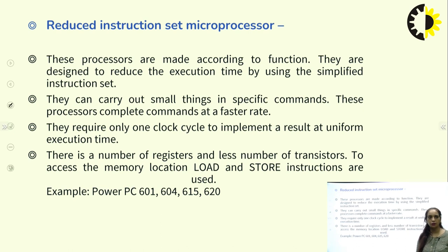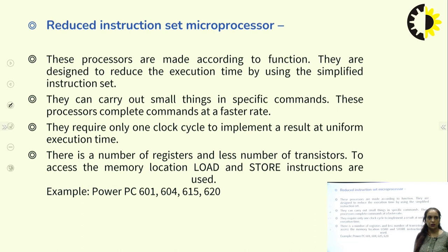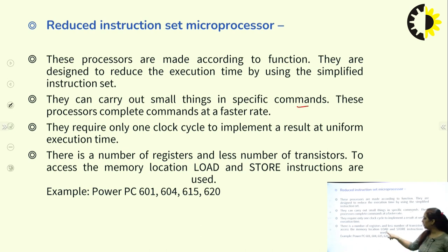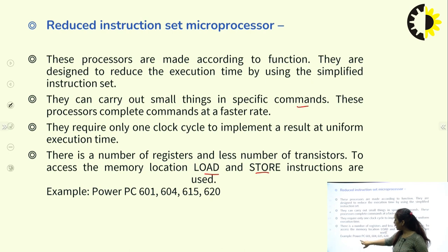The Reduced Instruction Set Microprocessor (RISC) is designed to reduce execution time by using a simplified instruction set. The operation is predefined and only the instructions necessary to carry out that operation are used — so the number of instructions is reduced. They can process completely at a faster rate, require only one clock cycle to implement the result at uniform execution time, and use load and store instructions to handle data. Examples include PowerPC 601, 604, 615, and 620.